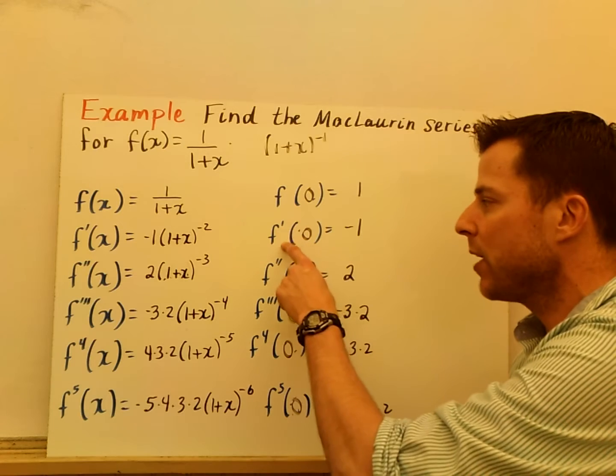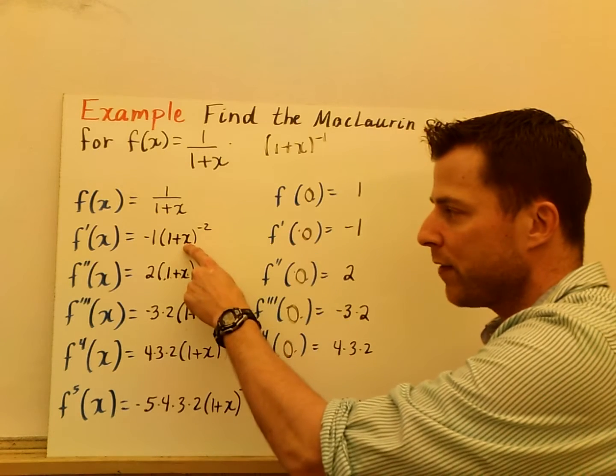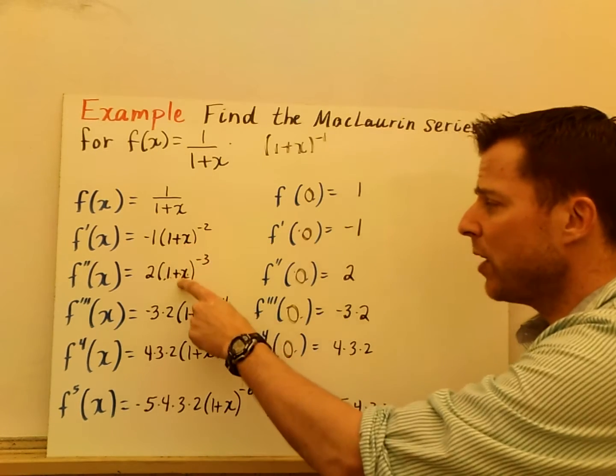Once I start plugging in values, f prime of 0, 0 in for x, that's just negative 1.